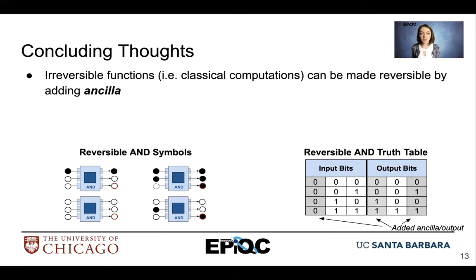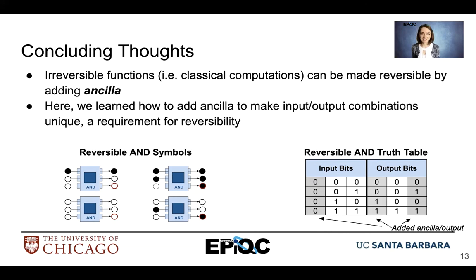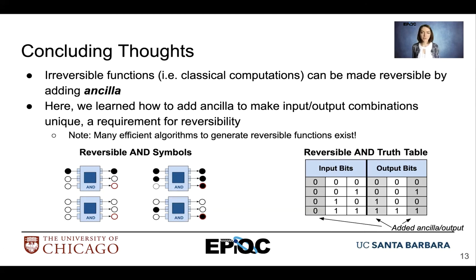In summary, irreversible functions, such as most classical computations, can be made reversible by adding Ancilla. With Ancilla, we can make input and output combinations unique, and this is a requirement for reversibility. Here we implemented a basic technique to make AND reversible, but many efficient algorithms to generate reversible functions from classical logic exist.